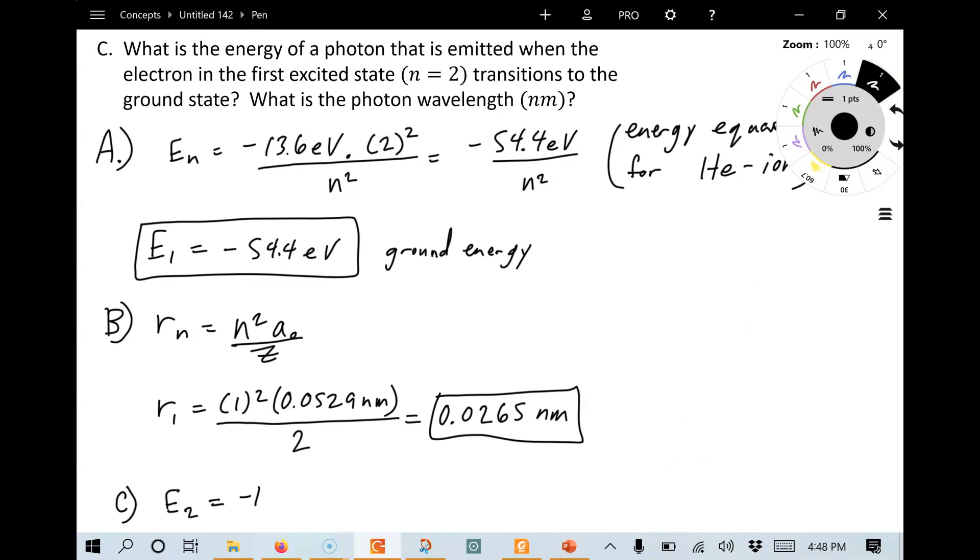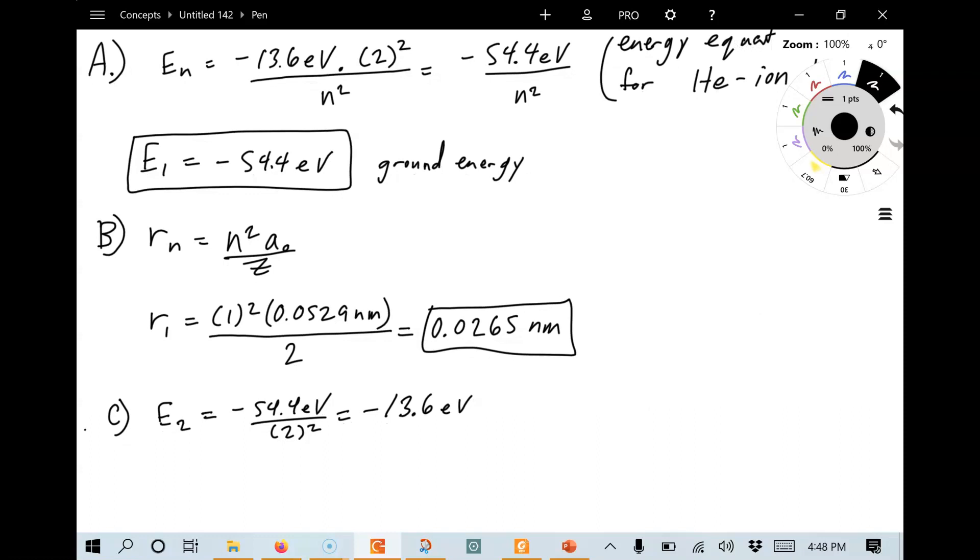That's going to be minus 54.4 eV divided by n squared, which is 2 in this case. That comes out to a negative 13.6 eV. Interestingly, because helium we multiply by 4, and then for this level, we're dividing by 4. And so now we've got the two values, the ground state and the E2 state, first excited state.